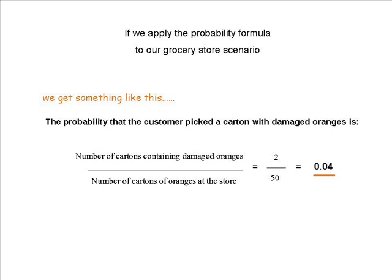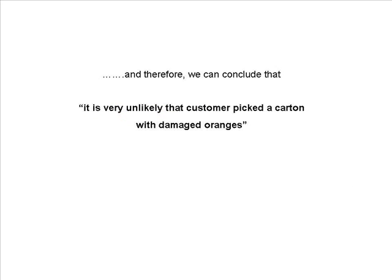If we apply the probability formula to our grocery store scenario, we get the number of cartons containing damaged oranges divided by the number of cartons of oranges at the store, which is 2 divided by 50, giving us 0.04. So the probability that the customer picks up a carton with damaged oranges is 0.04, and therefore we can conclude with confidence that it is very unlikely that the customer picks up a carton with damaged oranges.